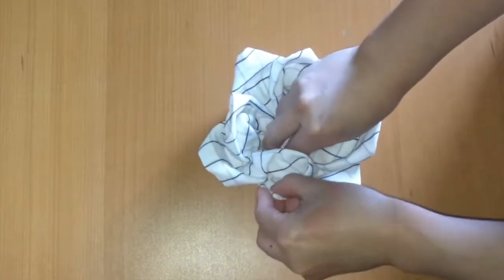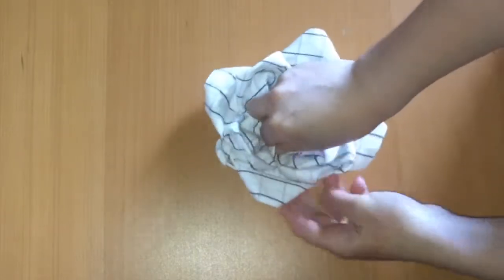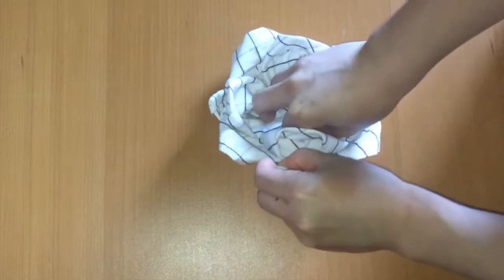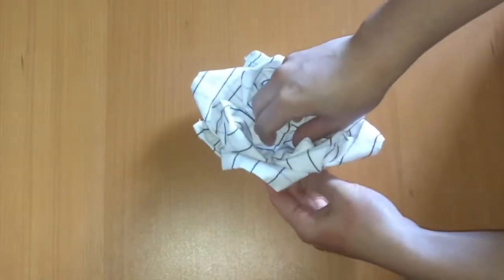And finally, our third set of flaps are underneath the original four points. This last set really helps to keep the shape of your flower, so tug them up and in.